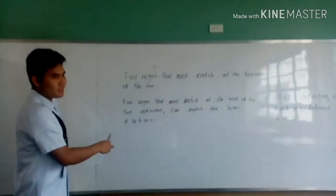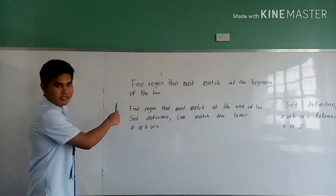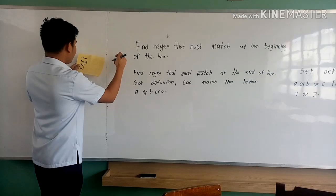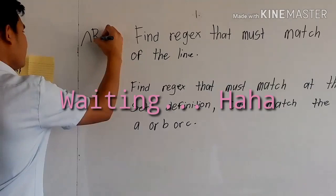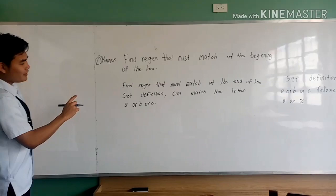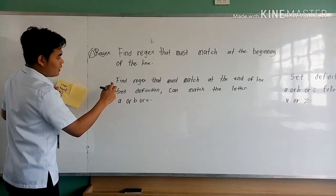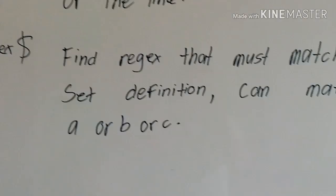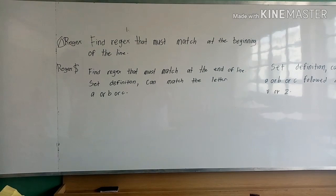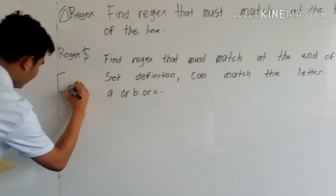This is an example of regular expression. Number one: find patterns that match at the beginning of the line — the caret symbol is used for that. Number two: find patterns that match at the end of the line — the dollar symbol is used. Number three: a set definition can match the letter A or B or C, written as [ABC].